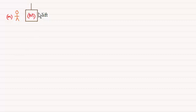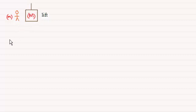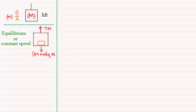Hi there. In this video I want to look at simple lift-style problems where we've got a lift of mass big M and a person of mass little m. I'm going to show you the type of diagrams we draw and work out the tension in the cable and the reaction of the person on the floor of the lift. Let's start by looking at a lift that is in equilibrium or moving at a constant speed.